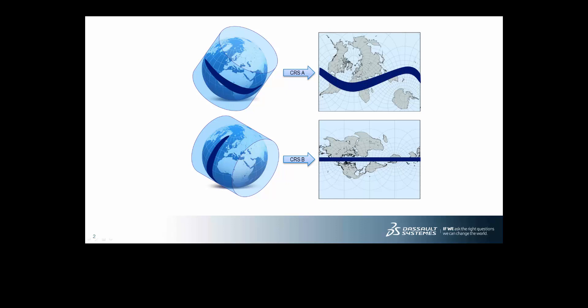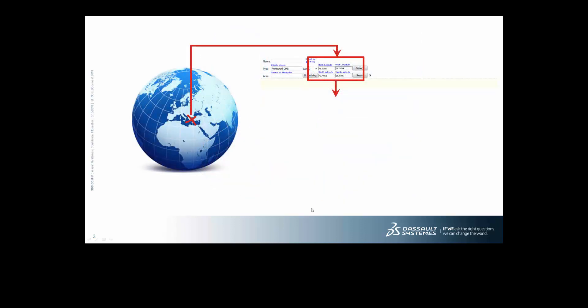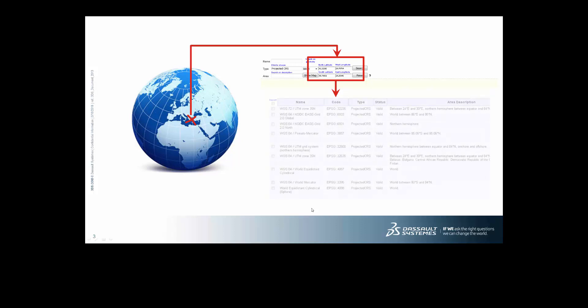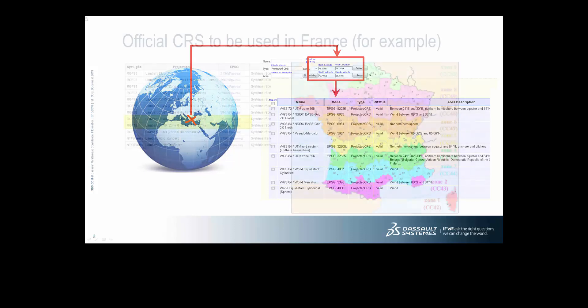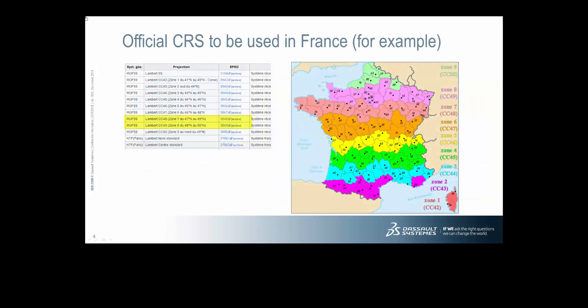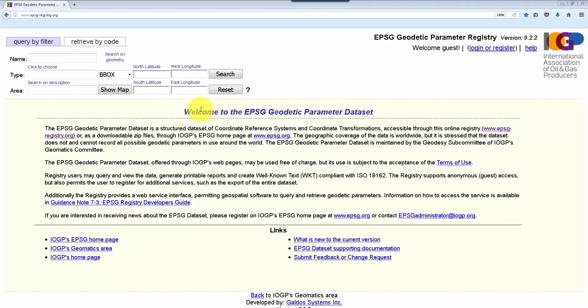There is only a local area where distances are kept during projection. Therefore, for every construction project depending on its location, you will need to set an appropriate CRS to import geolocated data in true length. The CRS to use is usually given by governmental authorities.